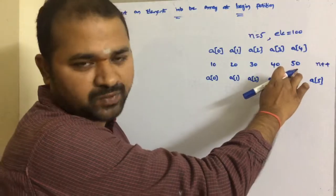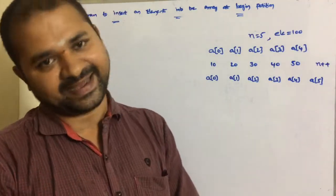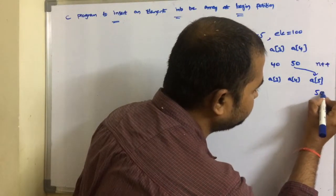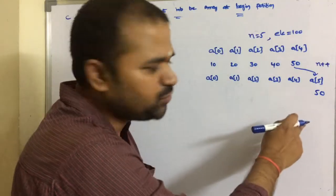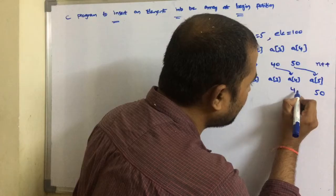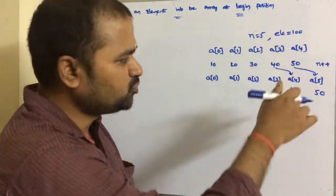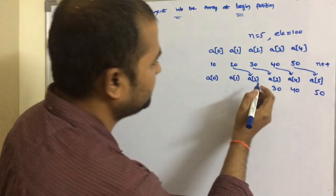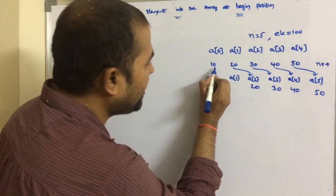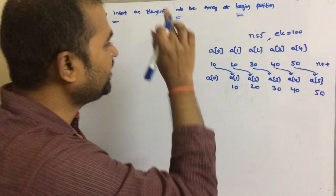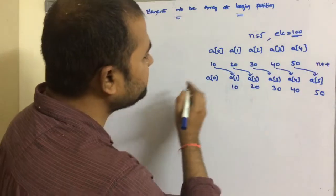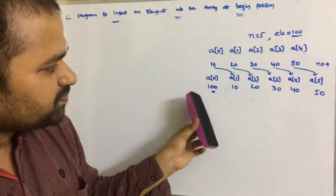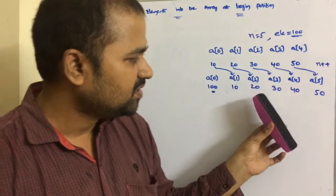The logic is simple: we move all elements one position to the right. a[4] moves to a[5] storing 50, a[3] moves to a[4], a[2] moves to a[3], a[1] moves to a[2], and a[0] moves to a[1]. Then we insert 100 at the beginning position a[0]. The final output is: 100, 10, 20, 30, 40, and 50.